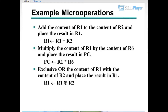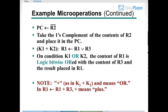Example micro operations: Add the content of R1 to R2 and place the result in R1: R1 ← R1 + R2. Multiply R1 by R6 and place the result in PC: PC ← R1 × R6. Exclusive OR R1 with R2, result in R1: R1 ← R1 ⊕ R2. Take the ones complement of R2 and place it in PC. On condition K1 or K2, bitwise OR R1 with R3: (K1+K2): R1 ← R1 OR R3. Note: plus in K1+K2 means OR; plus in R1+R3 means addition.